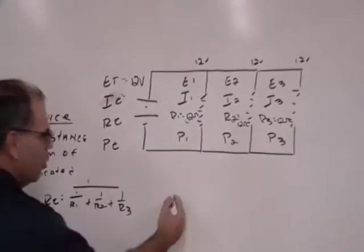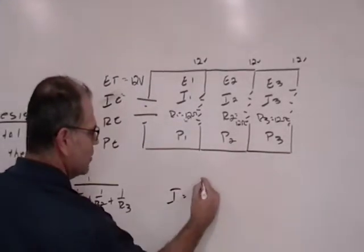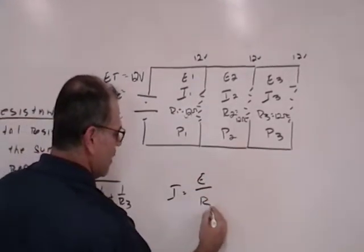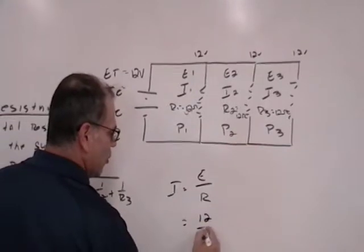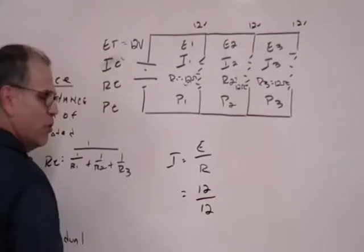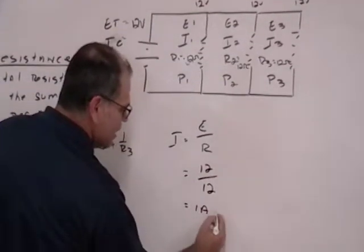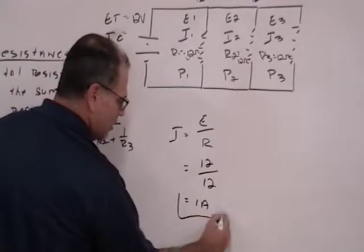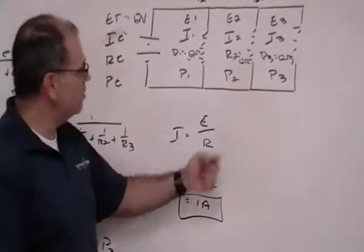If I use my Ohm's law for current, which is the voltage divided by the resistance, if I have 12 volts divided by 12 ohms, that gives me 1 amp of current through each one of the branches.